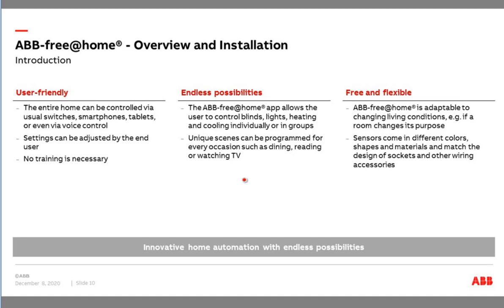The most important main advantage of Free at Home is definitely that it's so user friendly — not only for the commissioner who sets up the system, but also really for the end customer. We also have a lot of possibilities: not only the main applications like lights, heating, and blinds, but also the ability to add third-party systems, program different scenes and groups, and use logic functions to create comfort functions. Free and Flexible means we can select a centralized, decentralized installation, or a mix of both, and choose between the whole design ranges from ABB.